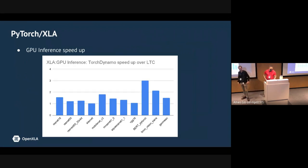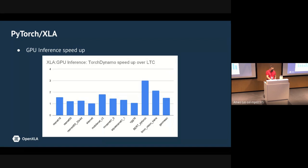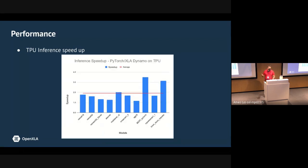Some of the results here are a direct result of the development to include Dynamo into PyTorch XLA 2.0. This is GPU inference: the initial numbers across multiple different types of models show a good gain — the geometric mean improvement across all models is about 1.5x. So Dynamo is actually helping on GPU inference, which was one of the top things we were excited about.